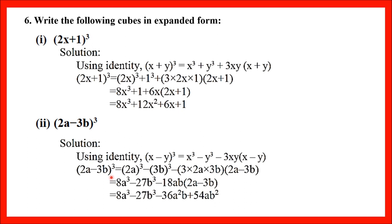We compare (x − y)³ with the question (2a − 3b)³. So x = 2a and y = 3b, with a minus sign in between. Now substitute into the right side of the identity: x³ becomes (2a)³, y³ becomes (3b)³. Next term: −3xy becomes −3 × 2a × 3b. Then (x − y) becomes (2a − 3b). So I have substituted all values into the identity's right side.